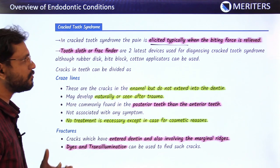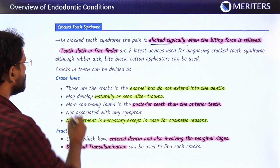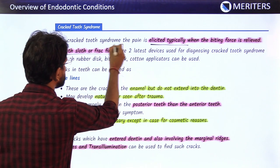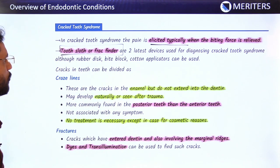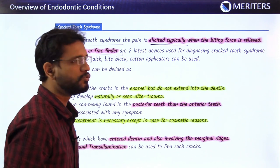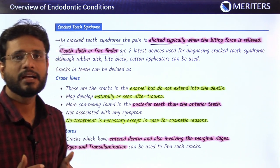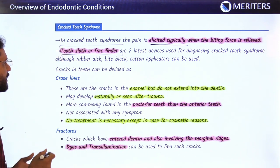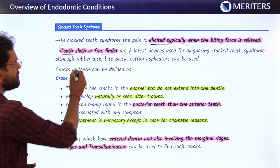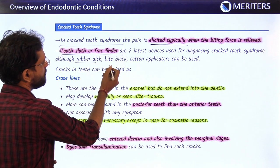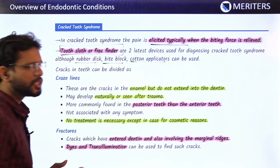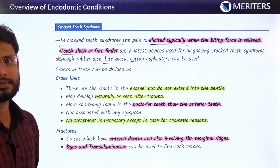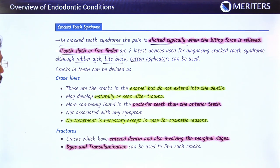Two important devices used for diagnosing cracked tooth syndrome are tooth slot and FragFinder — these are the latest ones. Other devices that can also be used include rubber disc, bite block, and cotton applicators. These are all used for finding cracked tooth syndrome.